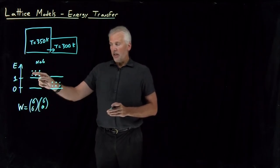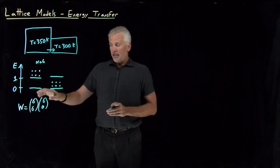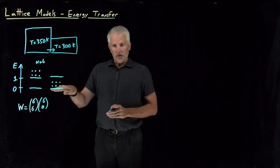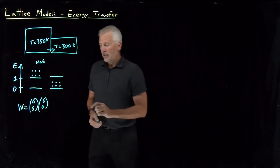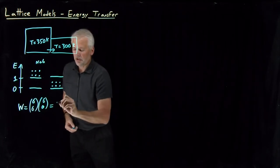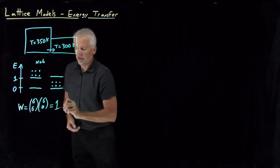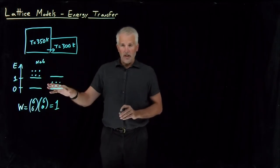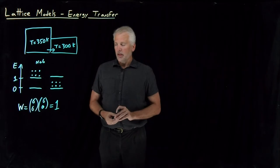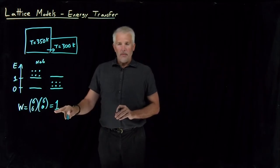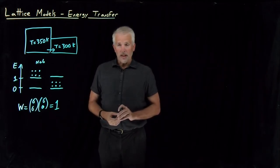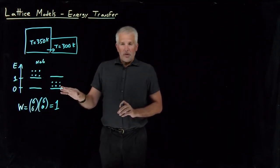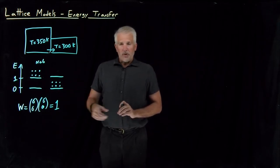For this very distinct macrostate where all the molecules are excited on one side and all are low energy on the other side, six choose six is just one, and six choose zero is just one. There's only one microstate — the one I've drawn — that matches that description. That is, of course, not the most probable state of the system. We can write other microstates that are more likely, that have a higher multiplicity.